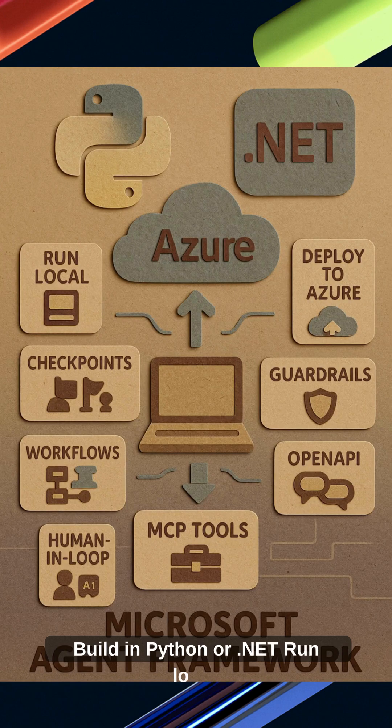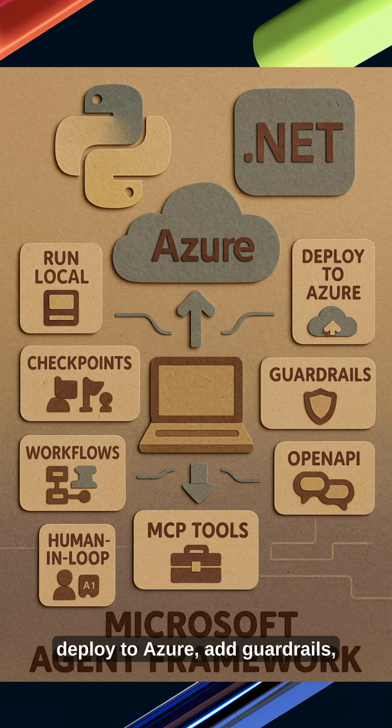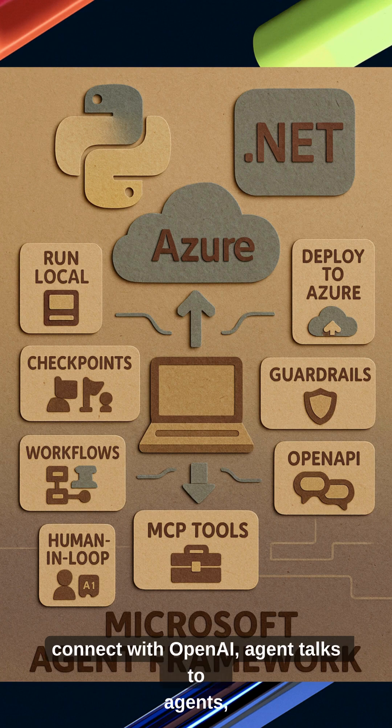Build in Python or .NET, run local, deploy to Azure, add guardrails, connect with OpenAI, and agent talks to agents.